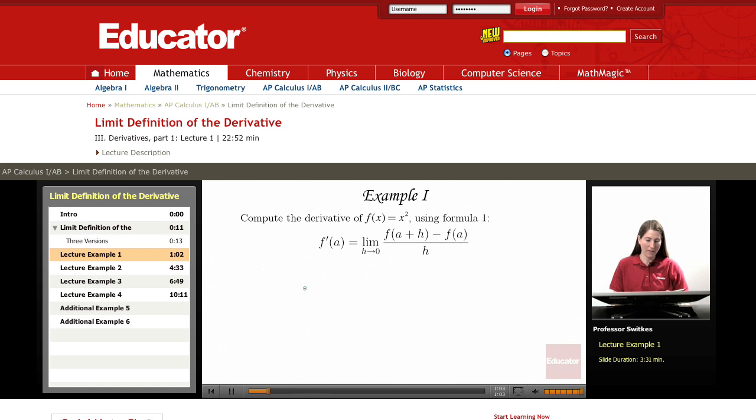So in this first example we would like to compute the derivative of f of x equals x squared using formula 1 and let's evaluate this derivative at an a value a equals 5. Okay so we'll use a equals 5 and we'll evaluate f prime of 5.